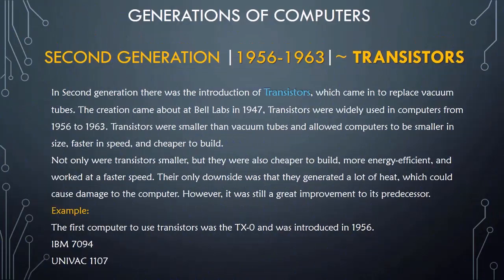The period of the second generation of computers was from 1956 to 1963. In the second generation, there was the introduction of transistors, which came to replace vacuum tubes. The transistor was created at Bell Laboratories in 1947. Transistors were smaller than vacuum tubes and allowed computers to be smaller in size, faster in speed, and cheaper to build.